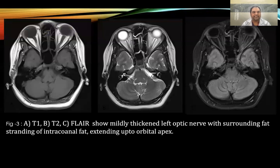Figure 3, A, B and C: These are T1, T2 and FLAIR axial images showing a mildly thickened left optic nerve with surrounding fat stranding of intraconal fat extending up to the orbital apex.